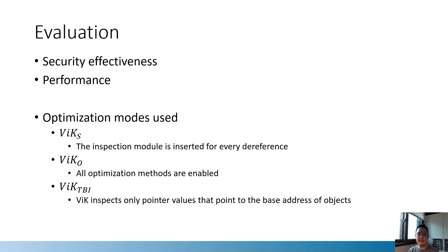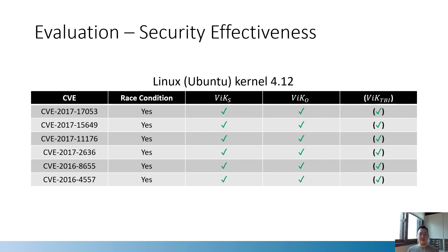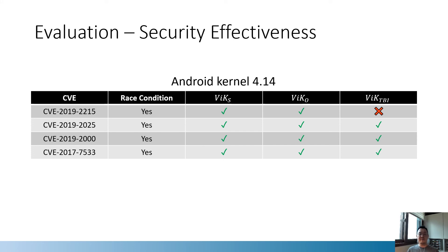In our evaluation, we checked the effectiveness and performance overhead of VIG. To evaluate effectiveness on the Ubuntu kernel, we selected six use-after-free vulnerabilities and tested them against the VIG-protected kernel. Because current x86-64 CPUs do not implement TBI, we manually analyzed every vulnerability to see if VIG TBI would defend against each exploit. VIG-protected kernels detected use-after-free caused by all those vulnerabilities. For Android kernels, we picked four use-after-free vulnerabilities, and VIG-protected kernels detected all of them. However, VIG TBI did not stop the exploit for CVE-2019-2015 because this exploit uses a pointer pointing to the middle of an object, while VIG TBI only inspects pointers pointing to the base address.